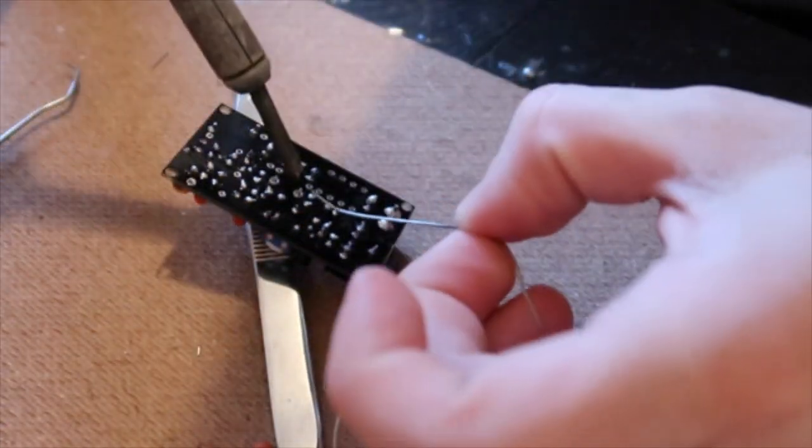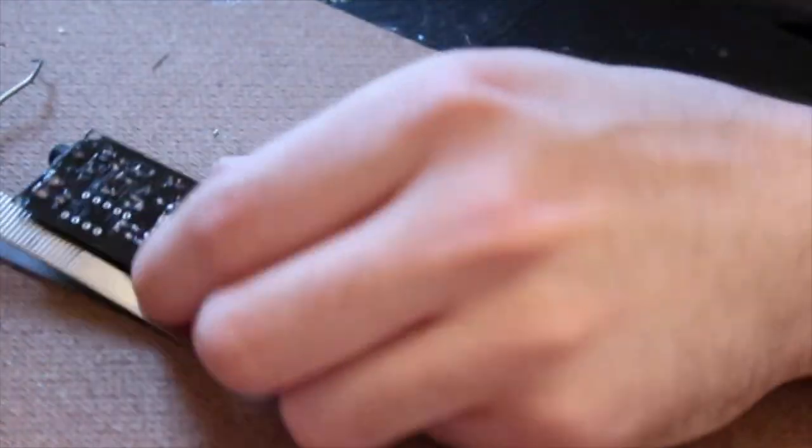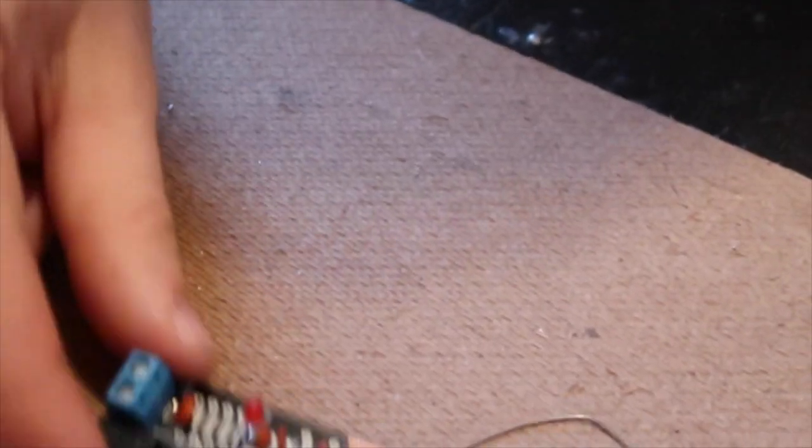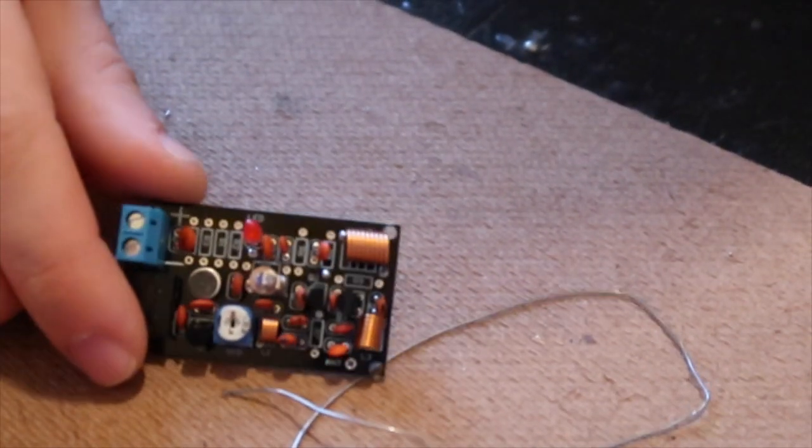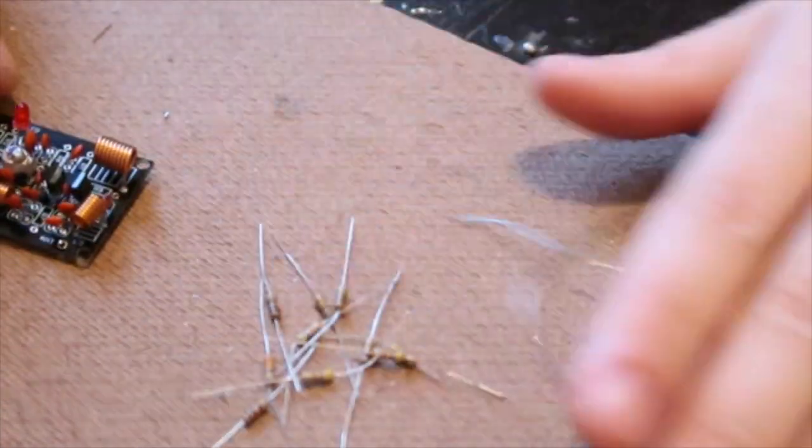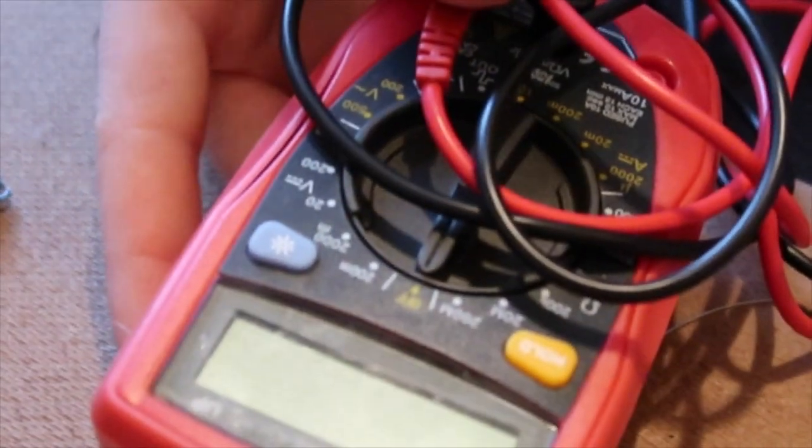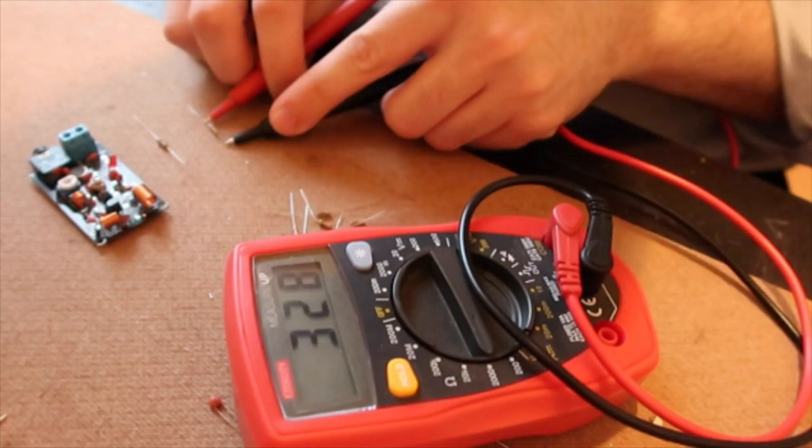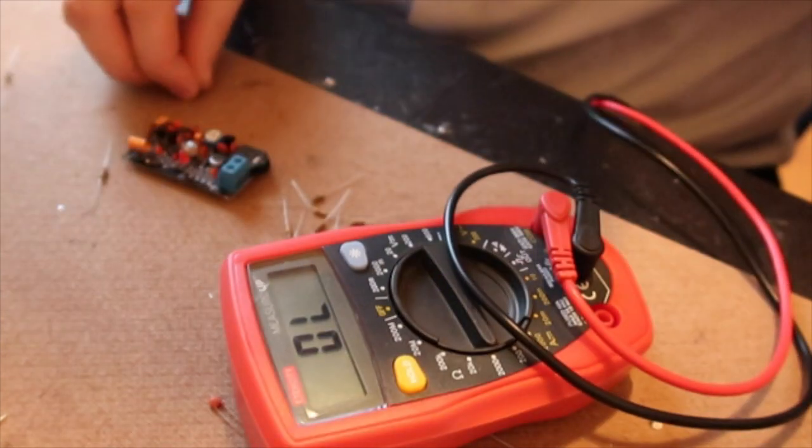So what is left to do is go through these resistors and figure out which one is which. To do that, I'm going to be using the voltometer. Take a quick look here. This is the 330.